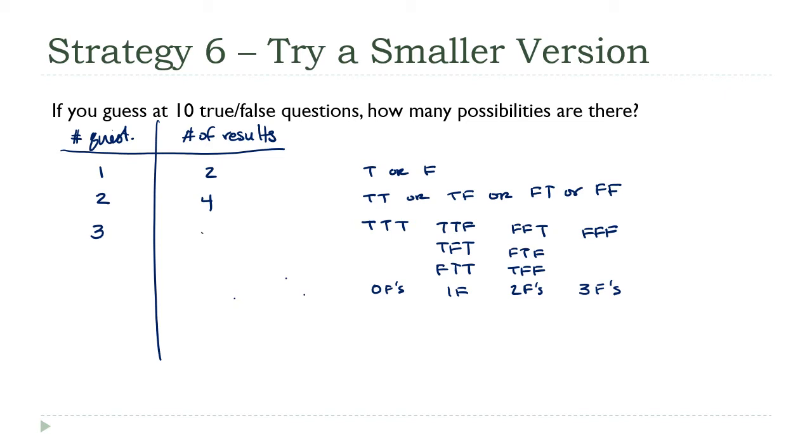If I add these up we get eight, and now I'm starting to see a pattern. Two is two to the first, four is two squared, eight is two to the third. I'm not going to write all these out, but you can test this—it's good practice for the being systematic part. I'm going to guess that four would be two to the fourth, which is 16.